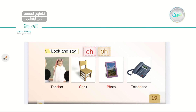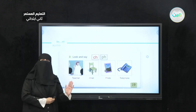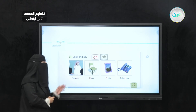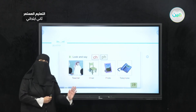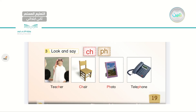On the lower part of page 19 I have phonics — two letters with different sounds. If I combine C and H, or P and H, I get a different sound. The first picture has the word 'teacher' — cha, cha, teacher. Next: 'chair' — cha, chair. Then 'photo' — P and H makes the 'fa' sound. Fourth picture: 'telephone'. So here I have two sounds: cha and fa.